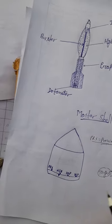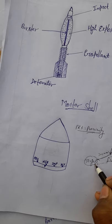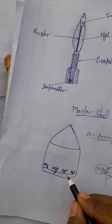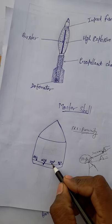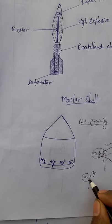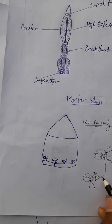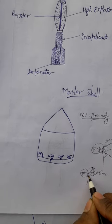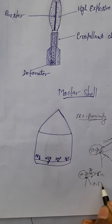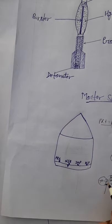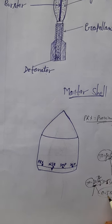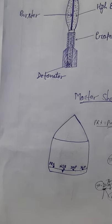IMP means impact. If the mortar shell is hitting the target, it impacts and blasts immediately. If set on IMP, it detonates on contact. The last setting is delay — NDLY. If the mortar shell hits the target and after 0.05 to 0.5 seconds delay, then it is blasted. So if the mortar shell is fit on delay, after hitting the target, it blasts after 0.5 seconds. These are the PRX, NSB, IMP, and delay fuse settings.